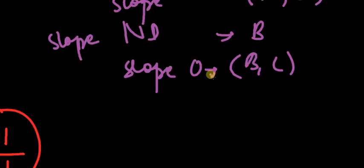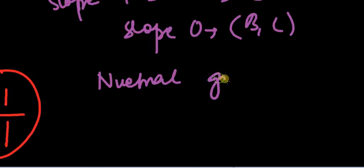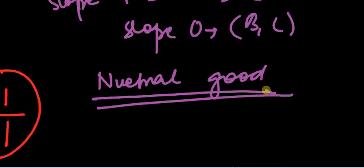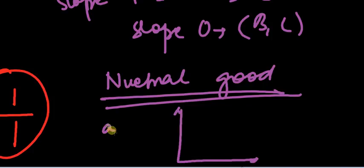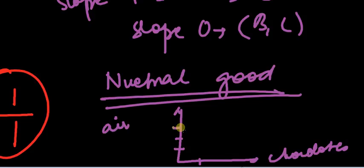Now I want to talk about neutral goods, goods, and bads. A good is called a neutral good if the consumer doesn't really care about it one way or the other. For example, I am neutral about the amount of air I intake. If I take air on the y-axis and chocolates on the x-axis: for one chocolate, however much I increase the air, utility stays constant. But the moment I increase chocolates from one to two, utility increases.